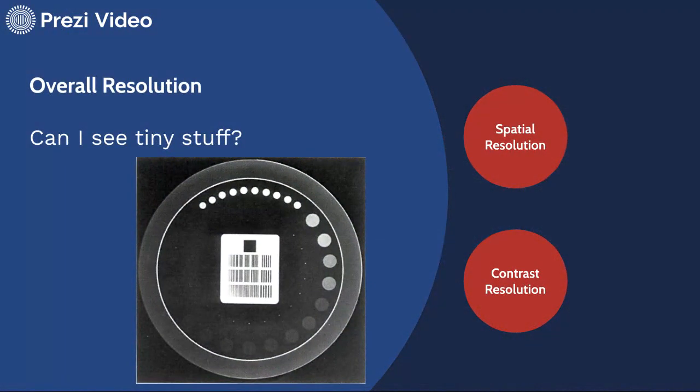What we're talking about when we talk about resolution is just the question, can I see tiny stuff? These types of phantoms are helpful for looking at that tiny stuff. If we're looking at spatial resolution, we're oftentimes looking at these little line pairs at the center of this phantom. If we're looking at contrast resolution, we're looking at these gradual shifts from white through gray to black in these small circles around the outside of the phantom.